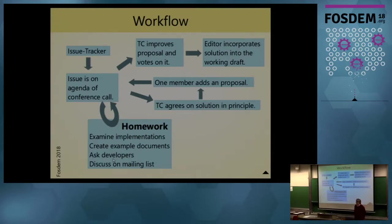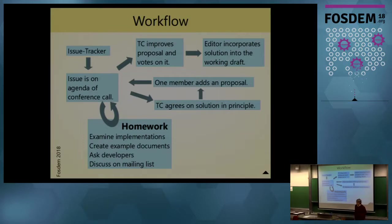One member gets the issue assigned and drafts a solution, which means changing the schema and the text. In a final run, the TC votes on the proposal, and then the issue is solved. But that is not the end of the work — all changes have to be incorporated into a draft for the next version of the specification. Currently the TC has a backlog of nearly 100 resolved but not yet included issues, and there exists no complete working draft. Help is appreciated.